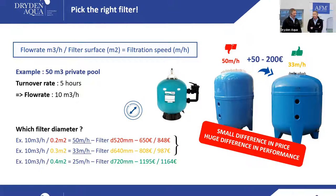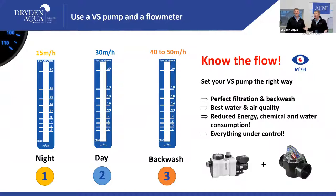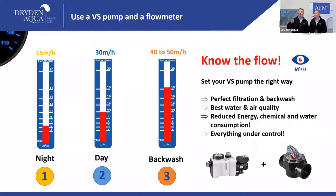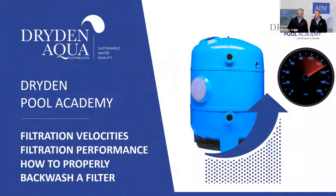Knowing your flow rate is key — it lets you set your variable-speed pump precisely for day, night, and backwash modes. Always use a flow meter; ideally a FlowVis for variable-speed pumps. Everything else is 'caveman technology.'